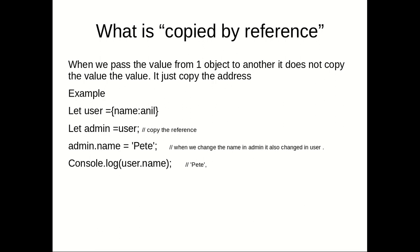When you assign one object to another — like `admin = user` — you're not copying the data, you're copying the address. For example, if the user object is stored at memory address 1100, then admin also points to address 1100. Both objects share the same address. So when you change the data of one, you change the data of both. This is what copy by reference means.